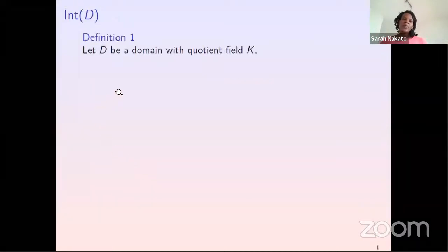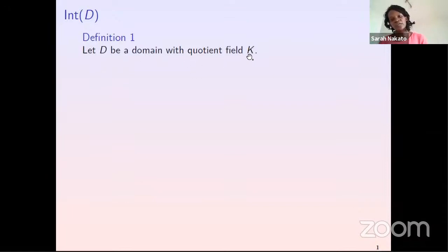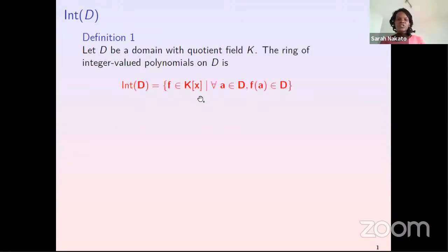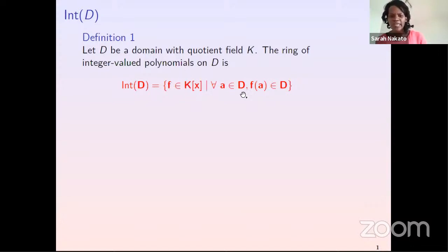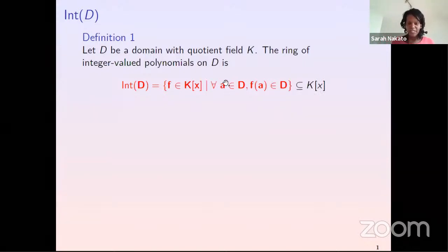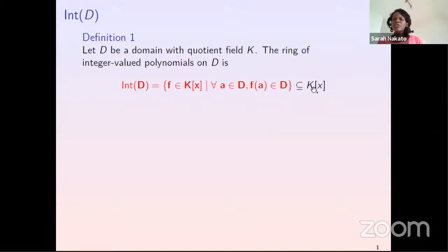So Int(D): we have a domain D with quotient field K — just imagine integers with the rationals. The ring of integer-valued polynomials on D, which we denote by Int(D), consists of polynomials with coefficients from K, such that when you input an element of D, the output is in D. So in other words, there are special elements of K[X] which map D to D. In particular, it's a subring of K[X].